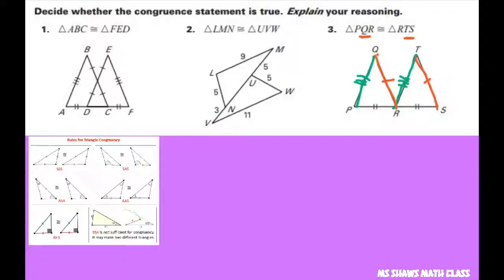And then finally, we need to check PR, which is 2. And RS would be also. So this is a yes. This is congruent by your side-side-side congruence postulate.